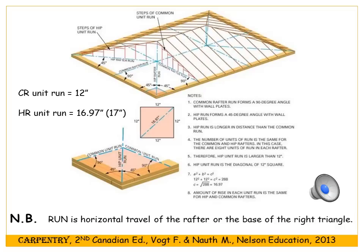This is the schematic of the hip roof. You can see the length of the building and the width of the building. The run of the building is half of the width. This is an equal slope hip roof, meaning the slope on the sides is the same as the slope on the ends.